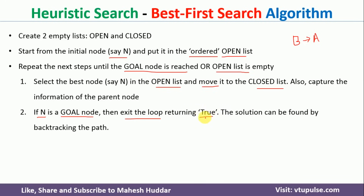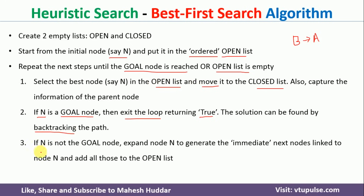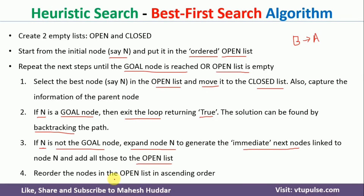Once we reach the goal node, we use backtracking to get the path. I will discuss this backtracking in detail in the next slide. Now, if the selected best node is not a goal node, we need to expand that node and generate its immediate successors. For example, for node B the successors might be C and D. We add those successors to the open list, and then rearrange the open list so that it is again in ascending order.